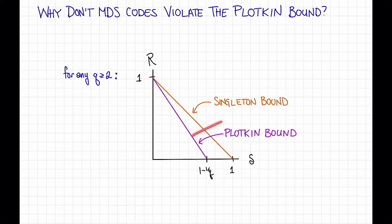For any fixed Q greater than or equal to 2, as we saw before, the Plotkin bound is strictly better than the Singleton bound. That is, it says that the Singleton bound is never achievable. But we just said that an MDS code is defined as a code that achieves the Singleton bound, and we gave an example of such a code, a Reed-Solomon code. How can this be?